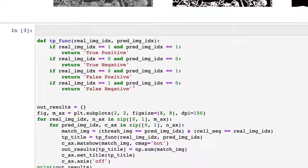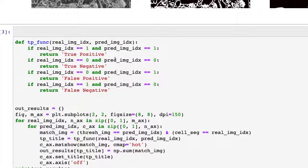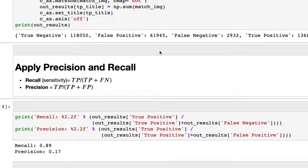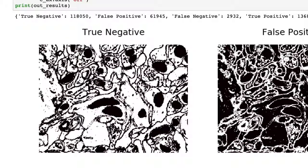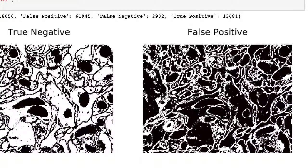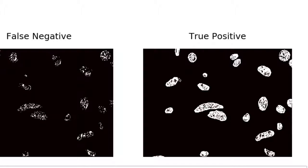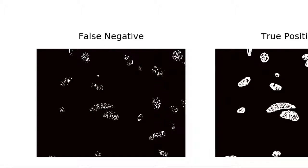We can go through each pixel and determine whether it's a true positive, false negative, and visualize that. The true negatives are where we said it was outside the mitochondria and it was in fact. The false positives are things we thought were inside the mitochondria but weren't, given this threshold. True positives are things we correctly guessed were inside. False negatives are points that were supposed to be inside mitochondria but were classified as background.